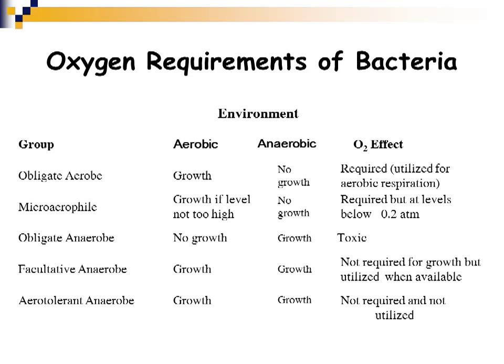Obligate anaerobes will not grow at all in the presence of oxygen — they only grow in environments with no oxygen, and oxygen is actually toxic to them. Facultative organisms, where many medically significant bacteria fall, will grow in the presence of oxygen and also where there's less oxygen. Aerotolerant anaerobes prefer an anaerobic environment but won't die in the presence of some oxygen — oxygen is not toxic to them as it is in obligate anaerobes.